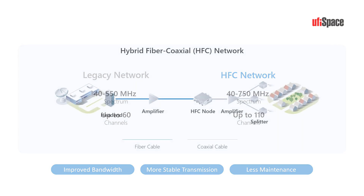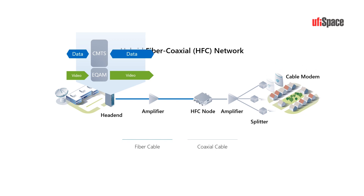As the internet became more popular in the 1980s, the demand for data surged and cable operators started using existing cable infrastructure to provide data services. Two key components provide this service: the Cable Modem Termination System, or CMTS, which oversees and handles data traffic between the network's central hub and cable modems at subscriber sites; and the EdgeQAM, which stands for Quadrature Amplitude Modulation, responsible for delivering video content to cable set-top boxes.